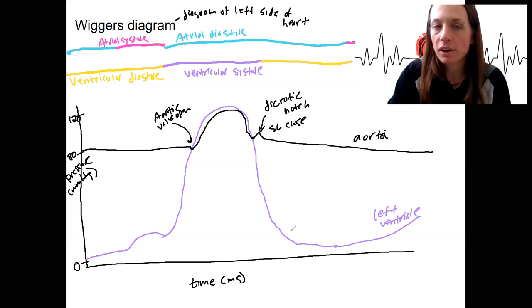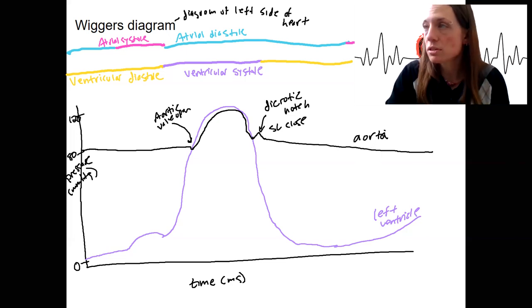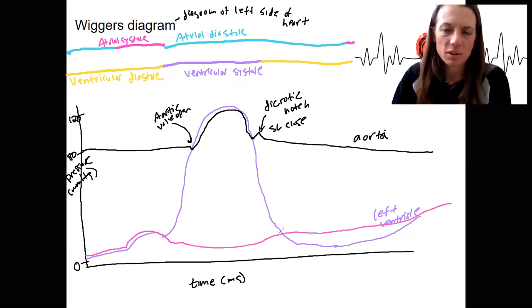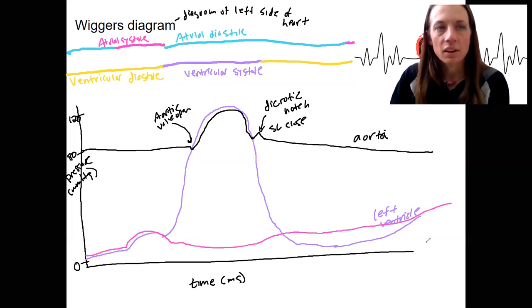So then lastly, we've got atrial pressures. Atrial pressure is going to also be pretty low at rest. Atrial diastole is what we're at right now. During atrial systole, we've got a bump up as that heart contracts. And then we're going to kind of stay low before we rise back up during atrial filling. So this is when there's that filling of the ventricles that goes through the atria.